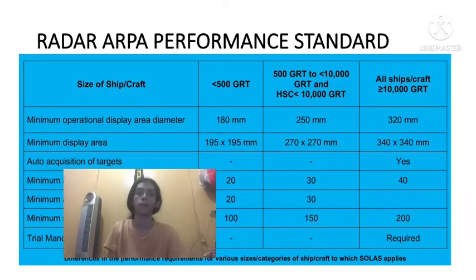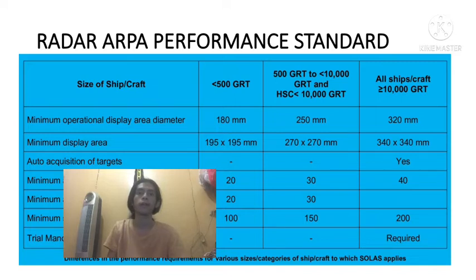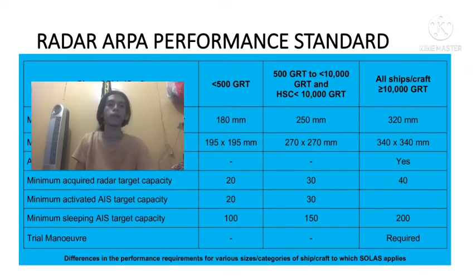Now for the radar ARPA performance standard. The table is organized by ship size: the first column is under 500 GRT, the next is 500 GRT to 10,000 GRT, and the last covers all vessels. The inside parameters of the radar ARPA performance standard include: minimum operational display area diameter, minimum display area, auto acquisition of target, minimum acquired radar target capacity, minimum activated AIS capacity, and trial mode.